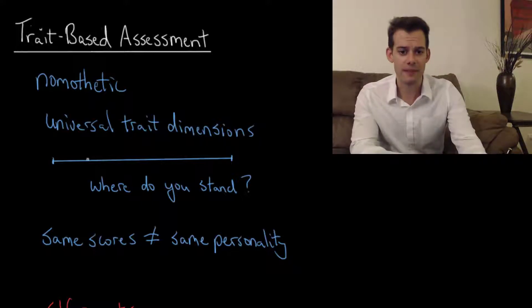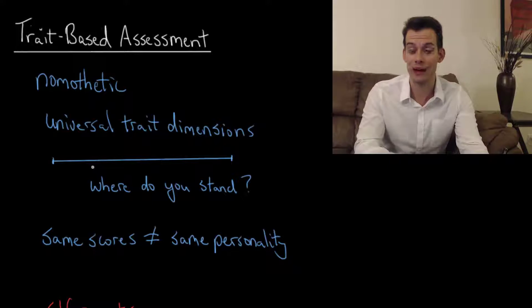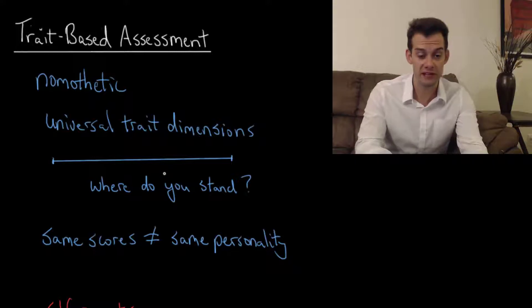So the idea is we have some dimension here, some particular trait like introversion. We might say we have some extremes, low and high extremes of this particular trait, and the purpose of the assessment is to figure out where do you stand on that line. The idea is that everybody falls on here somewhere, and you might score here and somebody else might score somewhere else, and then we can do that for a number of different traits.